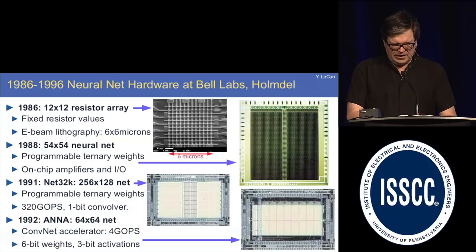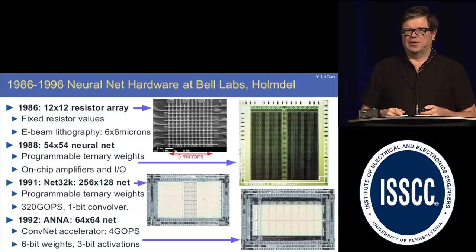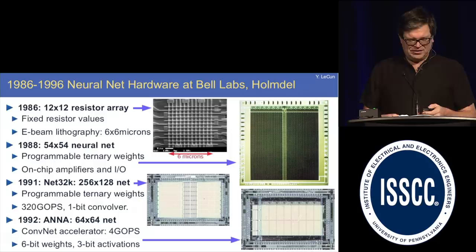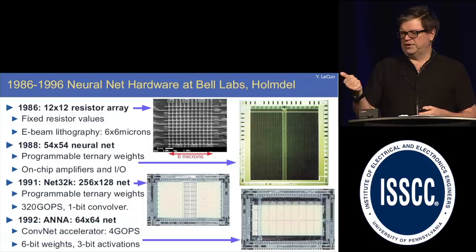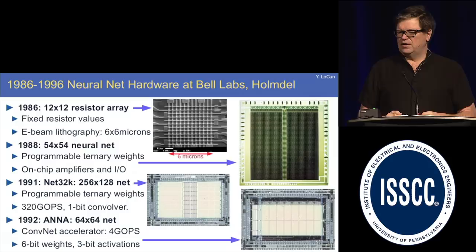I joined Bell Labs in 1988, and the group I joined, led by Larry Jackel at the time, was actually focusing on building devices for neural nets. They started by building a resistor array using e-beam lithography, so they could build incredibly small resistor arrays for the time — and then realized the amplifiers at the end are not that small. The advantage of making small resistor arrays was not that great, and they were not programmable. So the second generation chip was mixed analog-digital, where the inputs and outputs were digital but the computation inside was analog, and the weights were ternary.